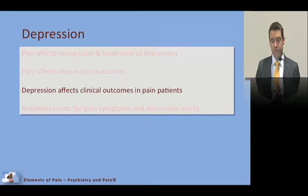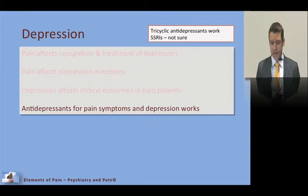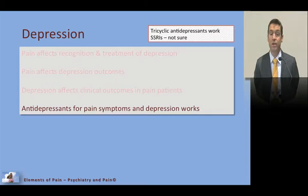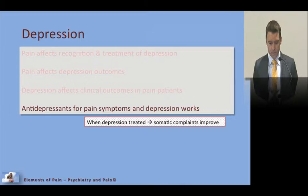Depression affects clinical outcomes: patients have worse and greater pain that lasts longer and is more difficult to treat. Both conditions must be treated together. Antidepressants do work for pain — tricyclics definitely, SSRIs less certain, and the newer SNRIs and NRIs probably work as well — and when depression is treated, somatic complaints and pain problems can also improve.